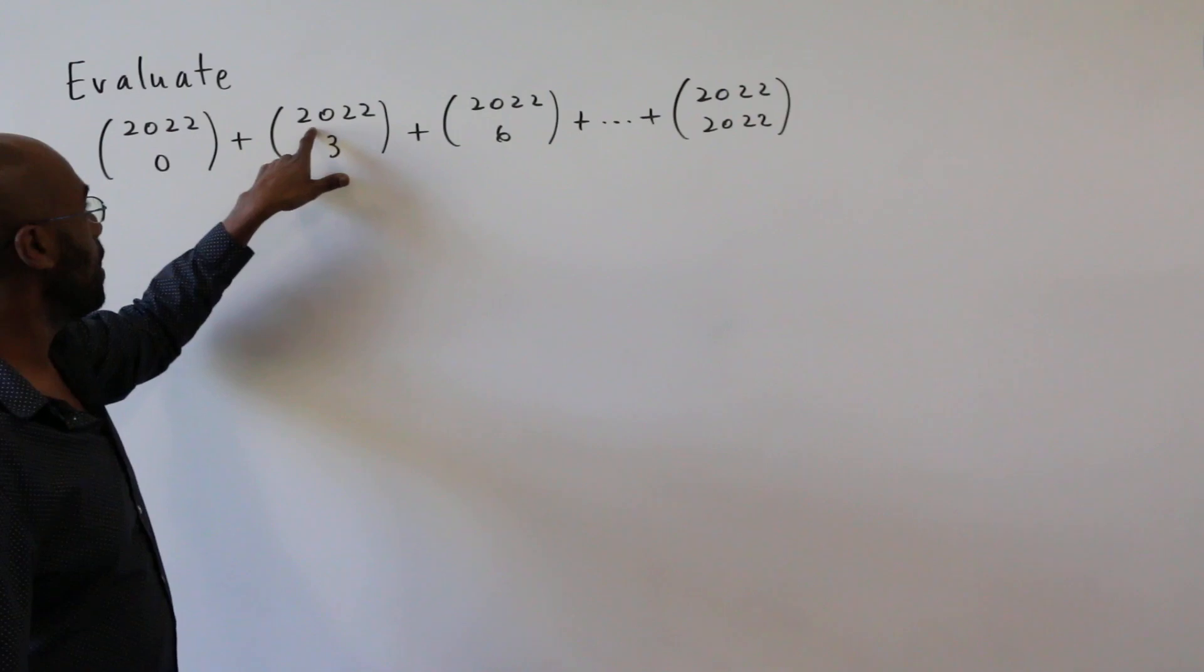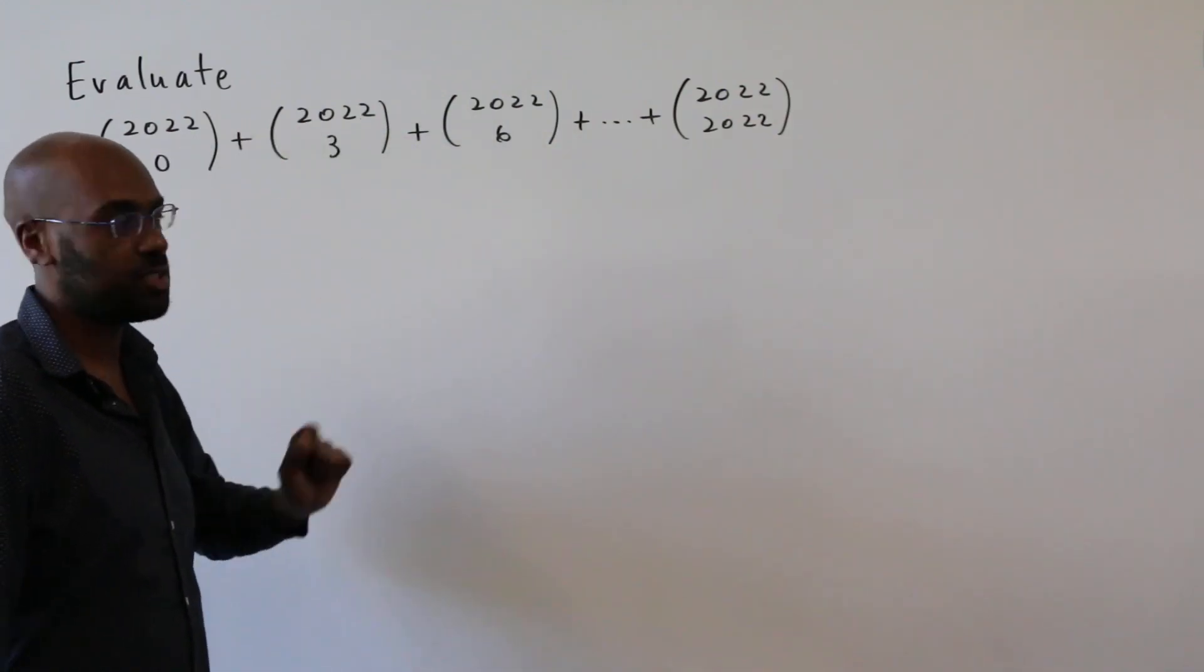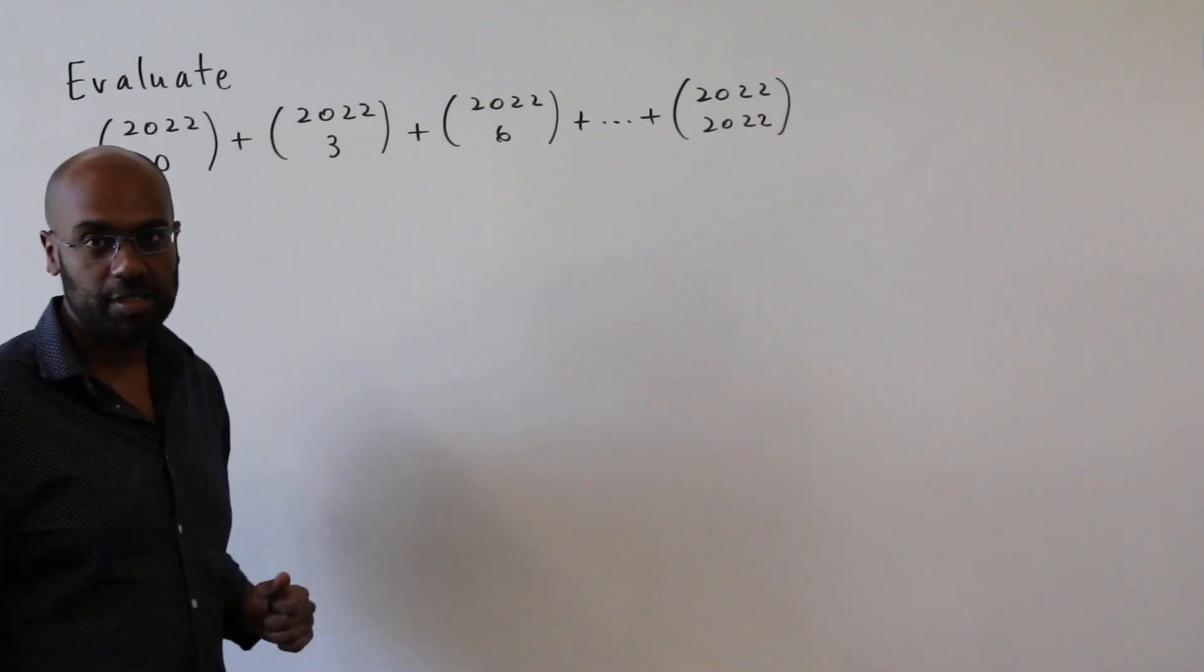We can check that by adding the digits and noticing that the sum of the digits is a multiple of three, so 2022 is a multiple of three itself.